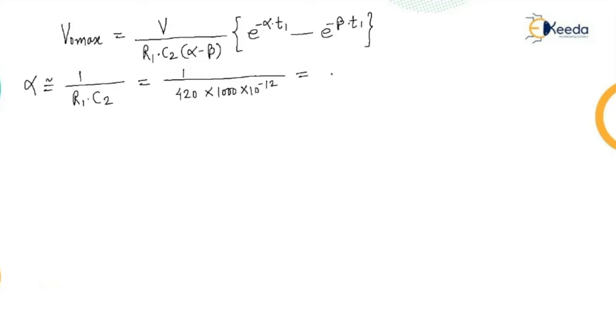This calculation gives me the value 2380952. Same way beta is nearly equal to 1 upon R2 into C1.